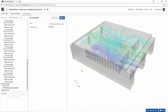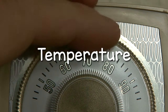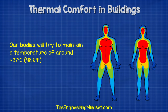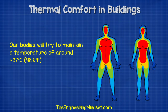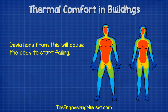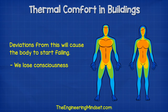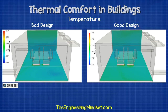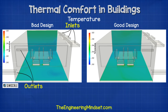Temperature is one of the most noticeable factors in comfort. Our bodies will try to maintain a temperature of around 37 degrees Celsius to keep our internal organs functioning optimally. If our core body temperature deviates from this by just a few degrees, our bodies will begin to fail — we can lose consciousness, go into cardiac arrest, which can lead to brain damage and even death.